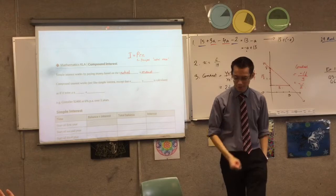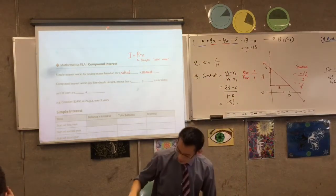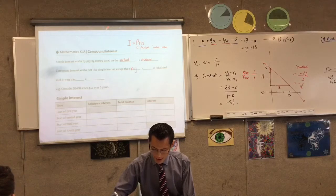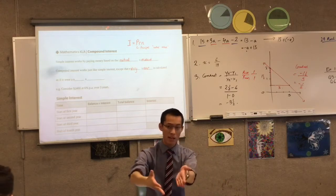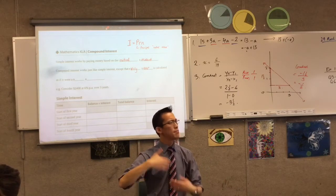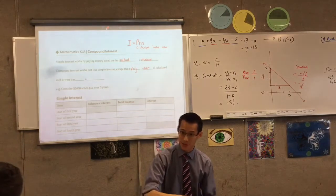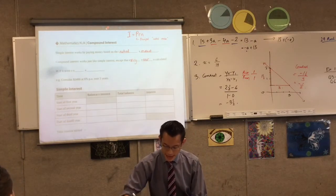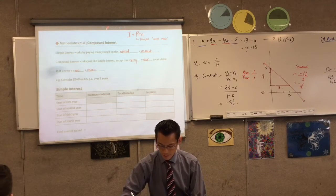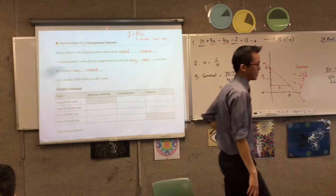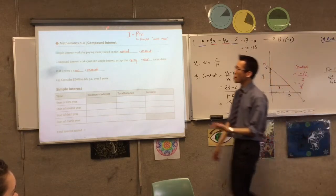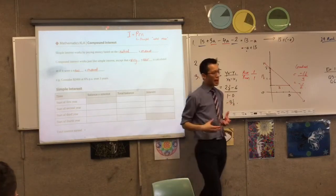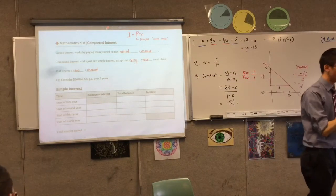Now compound interest is a little bit different. It's still interest, but every year they recalculate. Rather than getting the same amount of interest year after year, you get paid more and more — that's why it's called compound interest, it gets bigger and bigger. Every year is calculated as if it were a new amount. They look at the account and say, well now at the end of the year you've got more in there, so we'll pay you more interest. Let's look at the same amount of money, same rate, same time and see how simple and compound interest work differently.